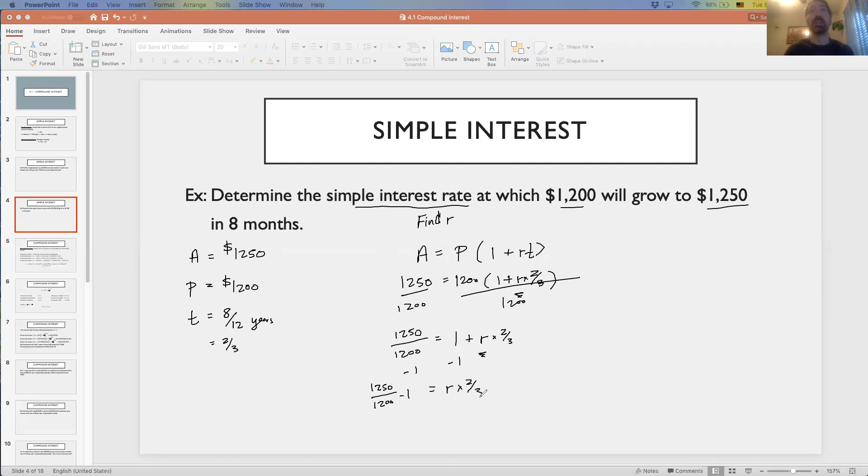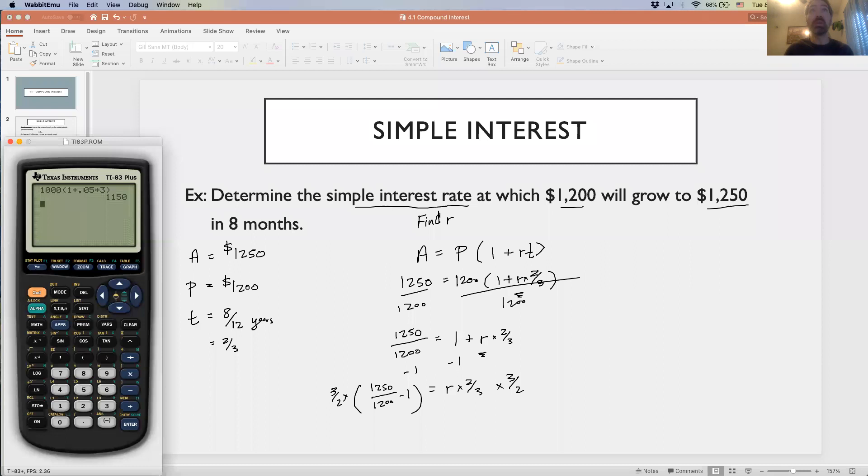Now we've got R times two-thirds. Finally, to get R by itself, we can divide by two-thirds, which is equivalent to multiplying by three-halves, multiplying by its reciprocal.